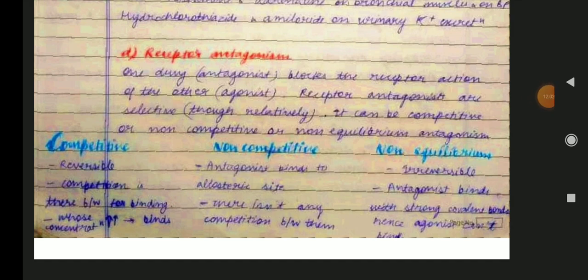Non-competitive antagonism is where the antagonist binds to an allosteric site — a site other than the main binding site. The agonist binds the main site and the antagonist binds the allosteric site; both can bind simultaneously. Non-equilibrium antagonism is irreversible — the antagonist binds with a strong covalent bond, so the agonist cannot bind at all.